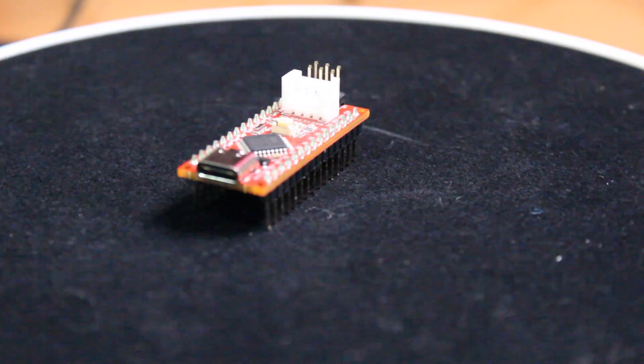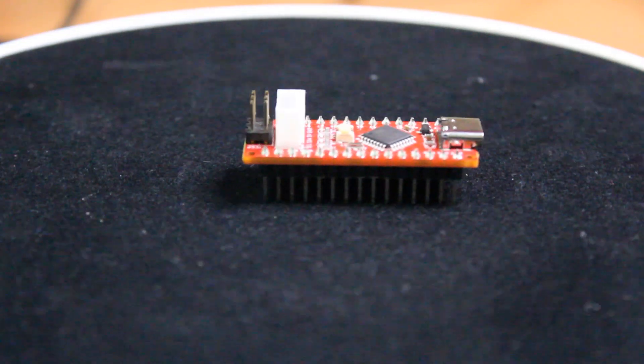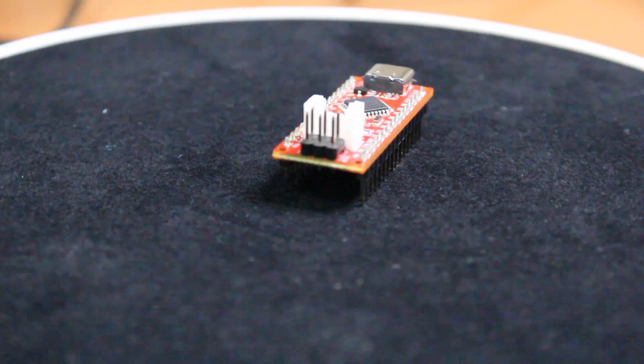This is the Seeeduino Nano. It has a Type-C USB connector—you can use a Type-C USB cable.